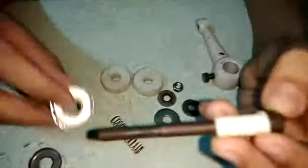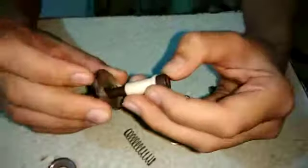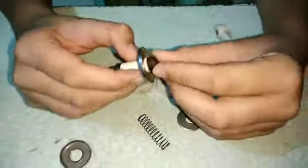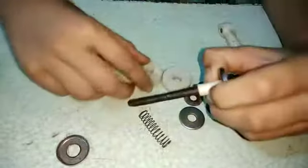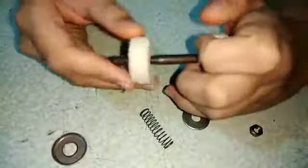Then fit this metal washer inside, then cotton washers inside this, both the cotton washers inside this.